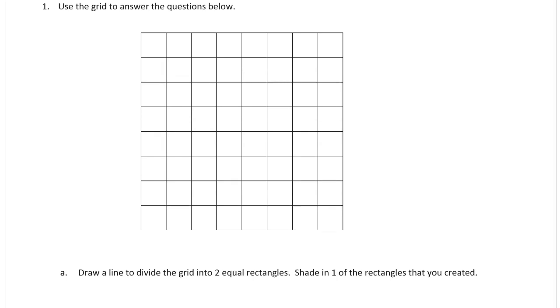A says draw a line to divide the grid into two equal rectangles. Shade in one of the rectangles that you created. Okay, so two equal rectangles.